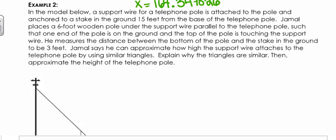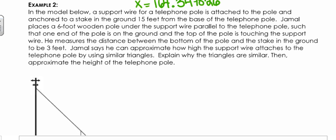In the next example, it says a support wire for a telephone pole is attached to the pole and anchored to a stake in the ground 15 feet away from the base of the telephone pole. Jamal puts a six-foot wooden pole under the support wire, parallel to the telephone pole, such that one end is on the ground and the top is touching the support wire. He measures the distance between the bottom of the pole and the stake to be three feet. Jamal says he can approximate the height where the support wire attaches using similar triangles — explain why and find that height.